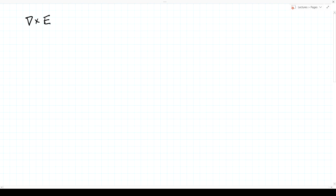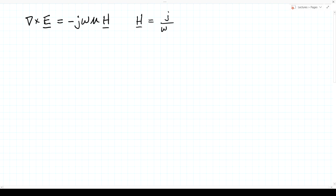Let's write Faraday's law for the phasor case. The curl of E equals minus the time derivative, but in the phasor domain that's a factor of jω times B, and we'll write B as μH. The first thing we can do is solve this for H — dividing by these terms or multiplying by j and dividing by ωμ — giving us H equal to j/(ωμ) times the curl of E. The first thing this tells us is that if we know the electric field, then the magnetic field is fully specified.